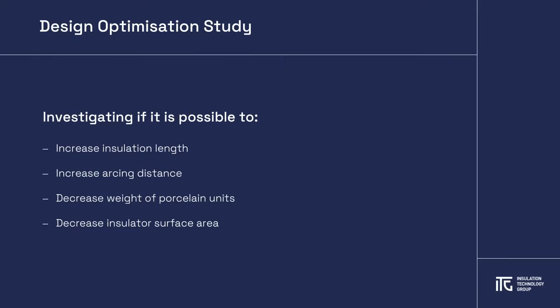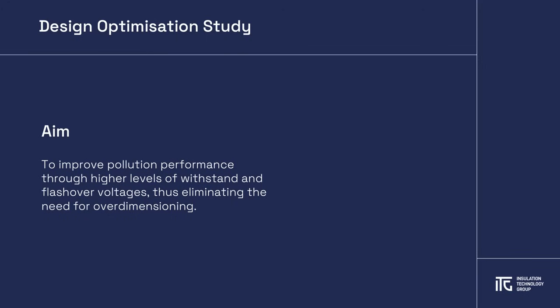In 2023, a study was conducted to investigate if design optimization could help to increase insulation length and arcing distance while reducing the weight of the porcelain units in service across Saudi Arabia. The aim was to improve pollution performance through higher values of withstand and flashover voltages and eliminate the need for over-dimensioning.